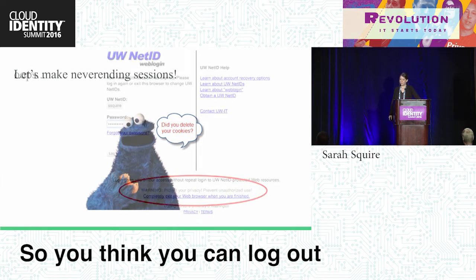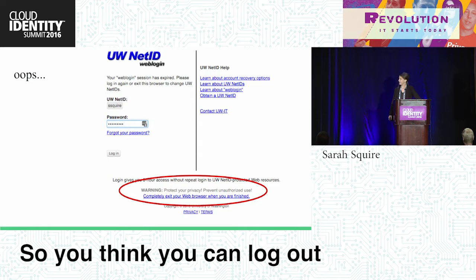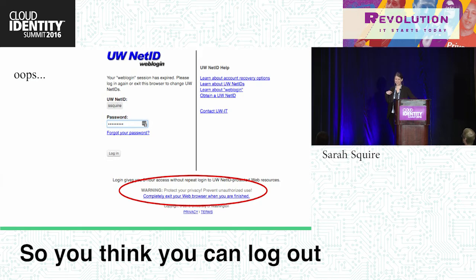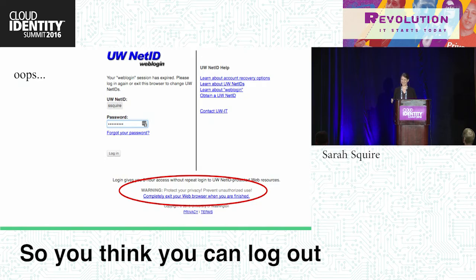So we ended up with things like this: 'Warning — protect your privacy. Prevent unauthorized use. Completely exit your web browser when you're finished.' This is the University of Washington login page. I get to criticize the University of Washington because I worked there for five years. They actually have a great identity team, but this is still on their website. Do you know what happens when users close their browser? Their privacy isn't protected. They don't actually log out. They're still logged into the IDP. So this is a big problem.